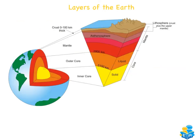This is a good diagram of the different layers that make up the earth's structure. As you can see, on the outside we've got the crust, then we have the mantle, and then we have the core. The inner core is shown in orange and the outer core in yellow.